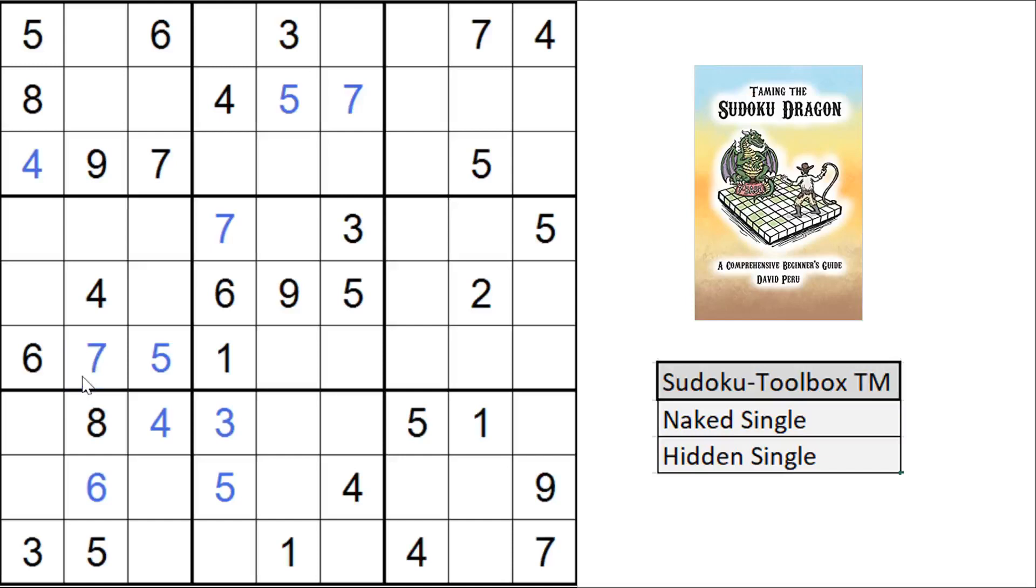So we can mark that as a 7. And then we bring a 7 in row 4, in row 6, in column 9. It means that has to be a 7.